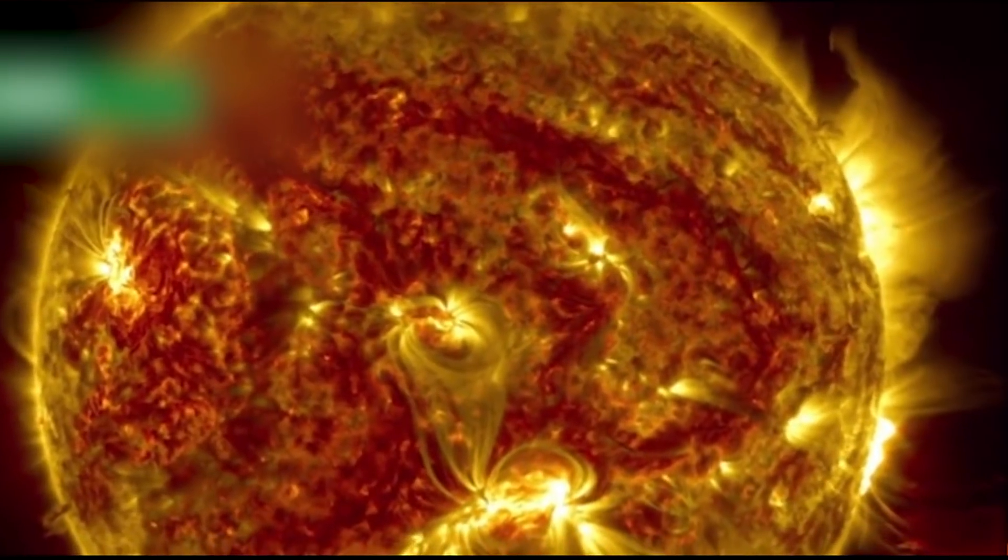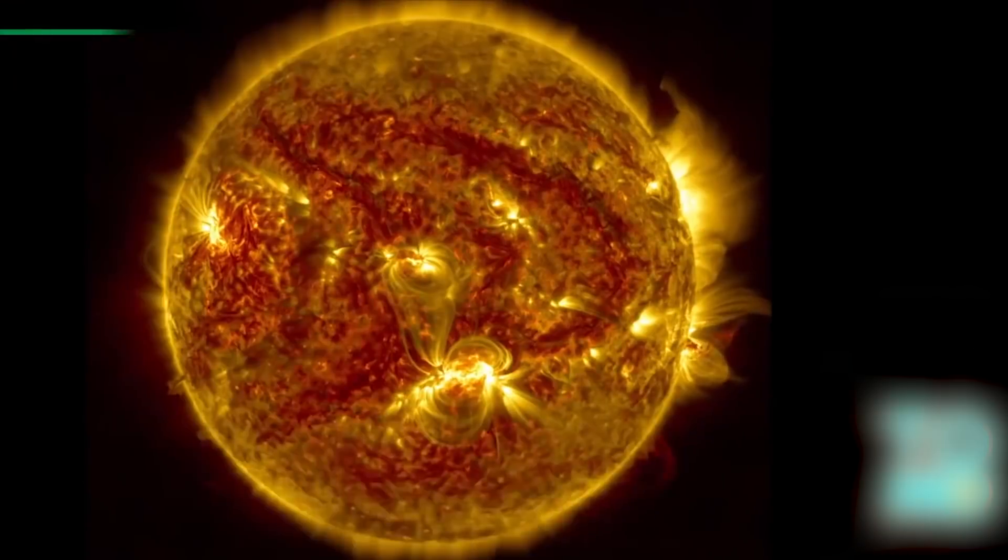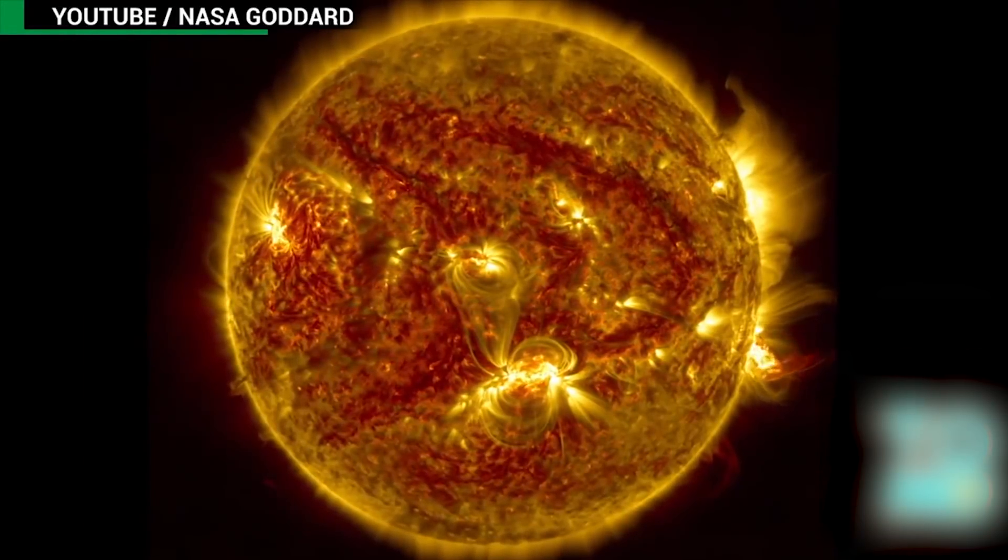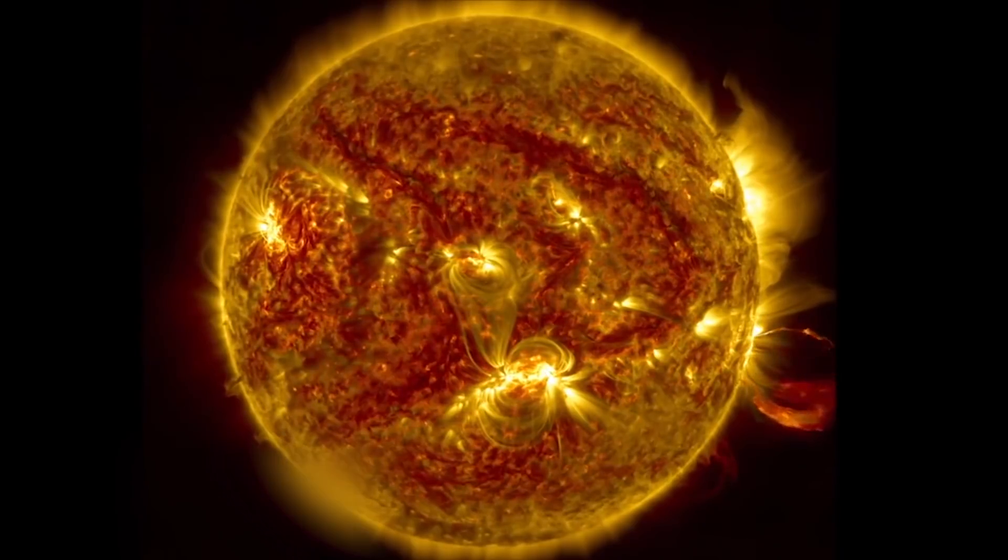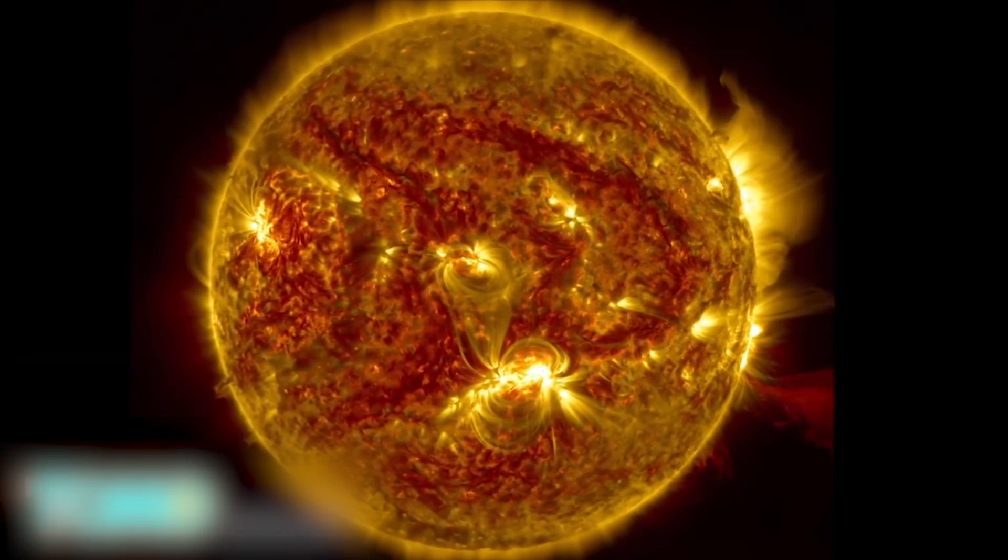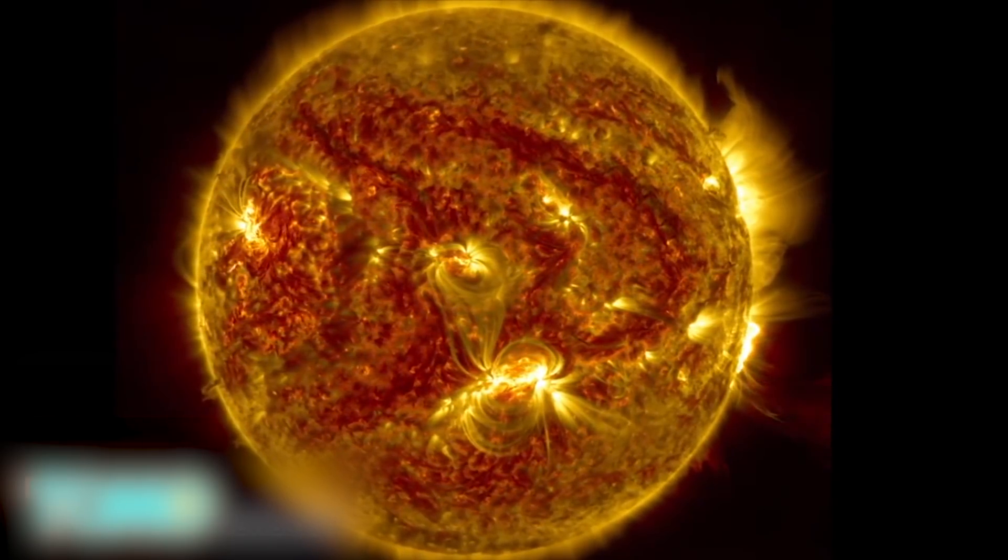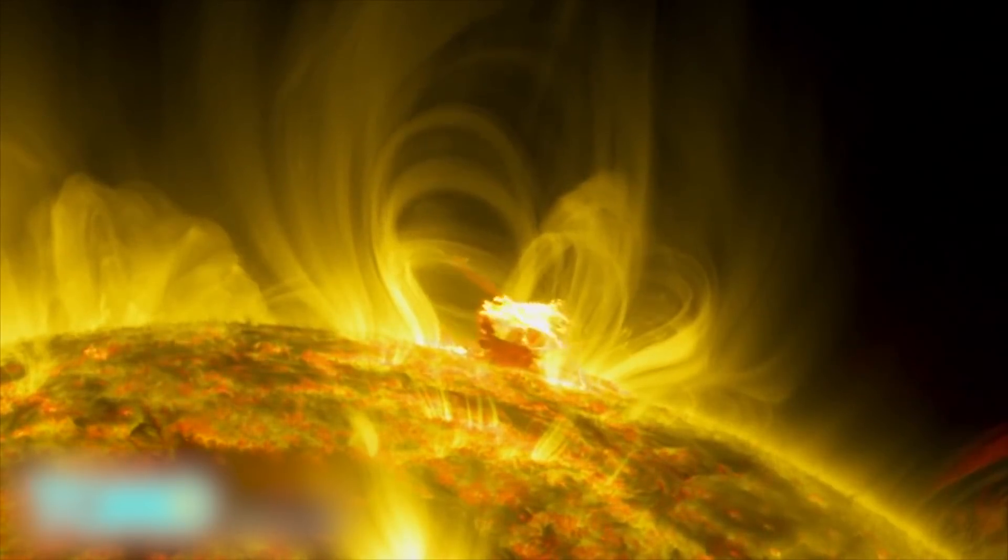NASA Captures Sun Eruption Sending Solar Material Into Space. This four-hour time-lapse video released by NASA shows a solar eruption that grows into a coronal mass ejection. The footage was taken on June 18th by the Solar Dynamics Observatory. According to NASA, the eruption sent a huge cloud of coronal solar material out into space.